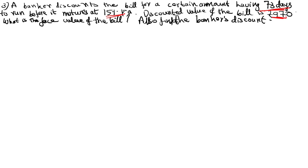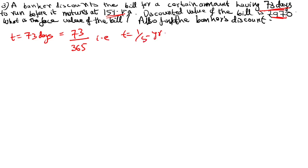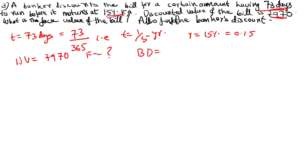Write the given data. t equals 73 days. To convert days into years: 73 divided by 365 equals 1/5 years. Rate of interest r equals 15%, which is 0.15. Discounted value DV equals rupees 970 is given. Face value equals question mark, and also BD equals question mark.